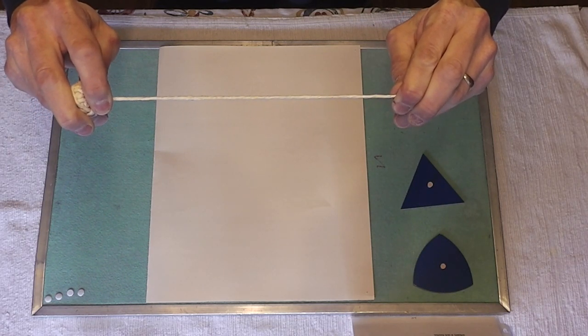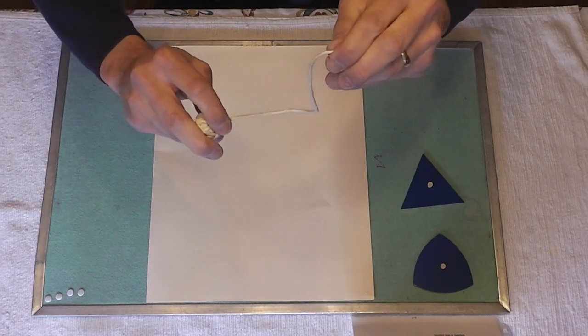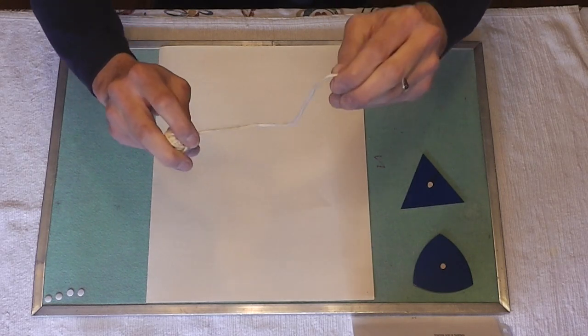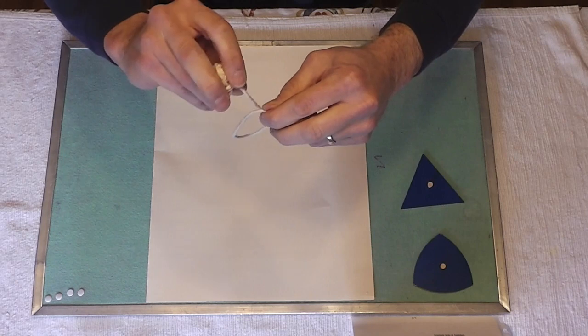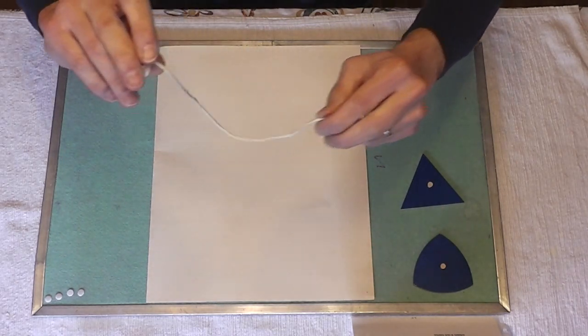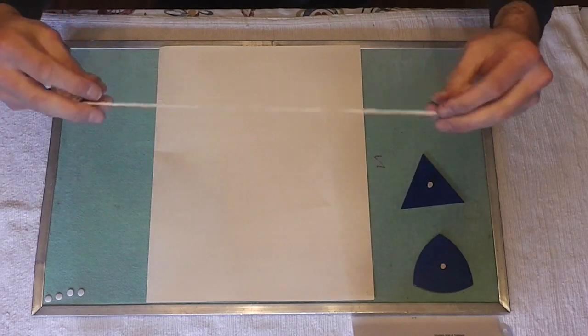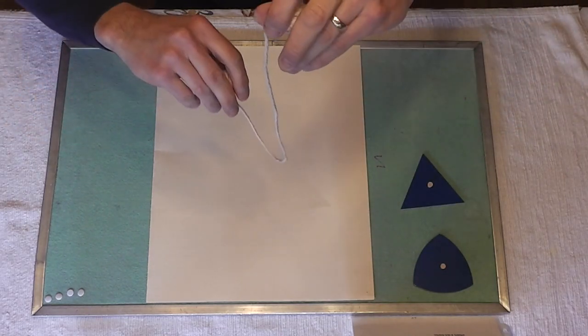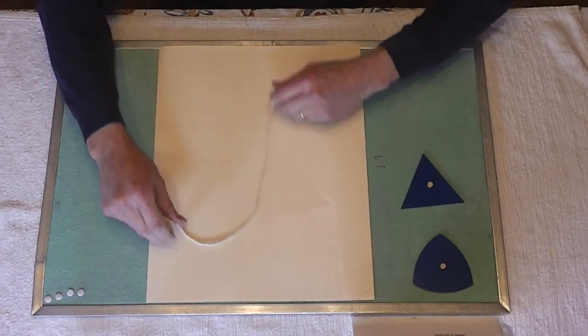Now if I were to release some tension, what do we see happening to our line? It's not straight anymore. It's going in different directions. No matter how I move it, it's going in different directions. A curved line constantly, continually changes directions.